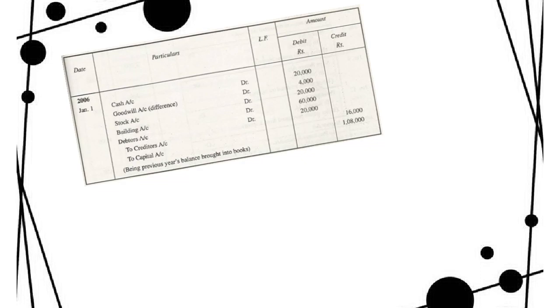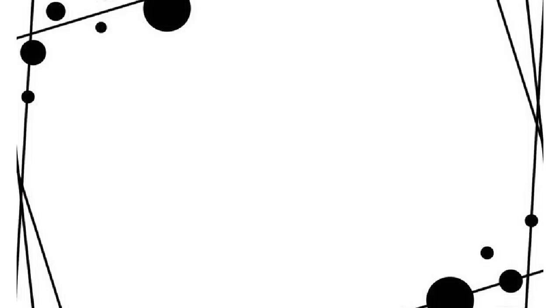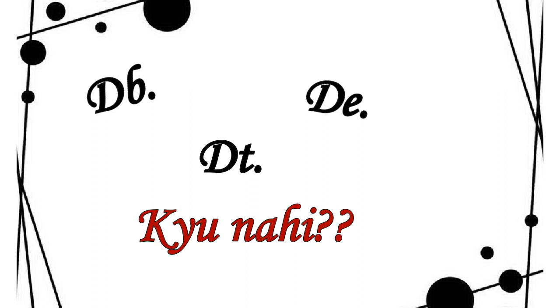So in 'credit', C and R come — that's understandable. But in 'debit', R does not come from the word debit. Let's go back into the history of accounting.